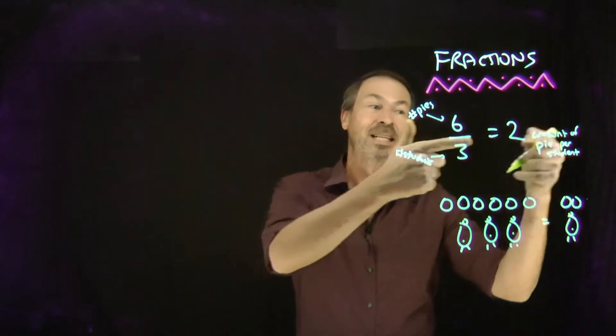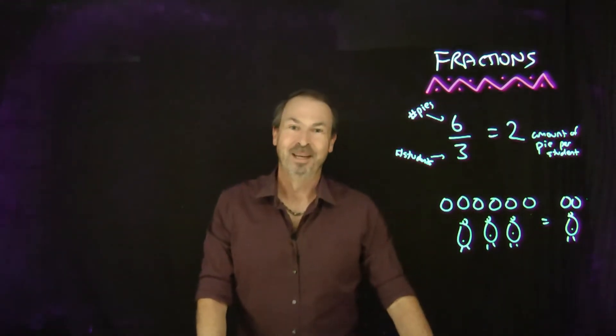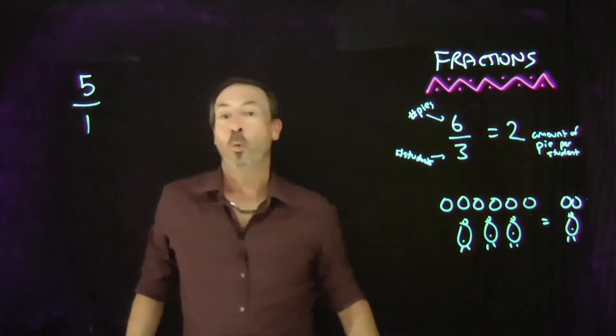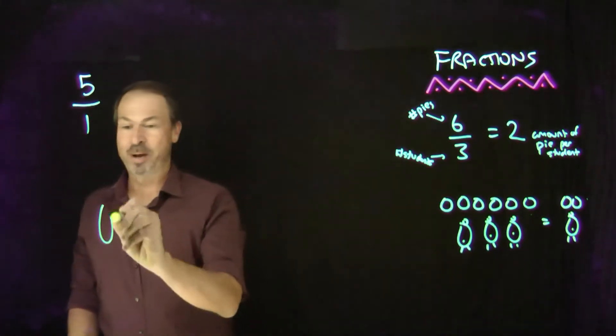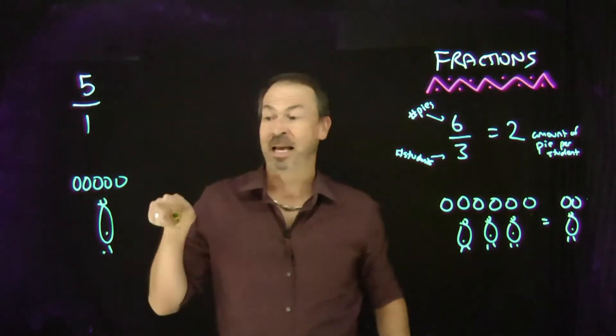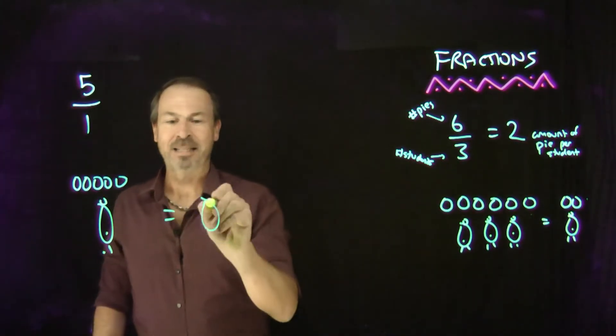6 pies shared equally amongst 3 students gives 2 pies per student. Now look at this example. Suppose I had 5 pies for one lucky student. Here's my one lucky student. Bingo! I meant to share 5 pies equally amongst that one student. How much pie is that per student?